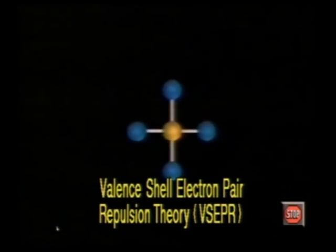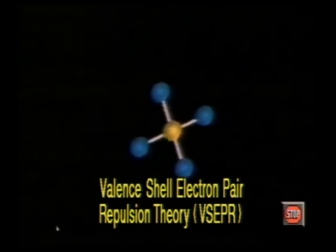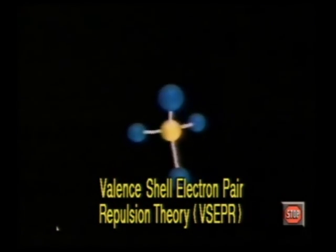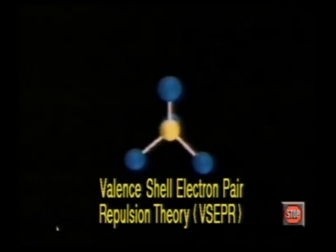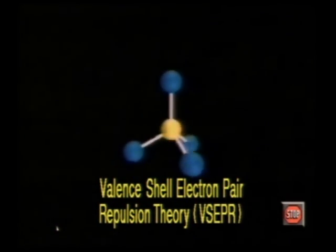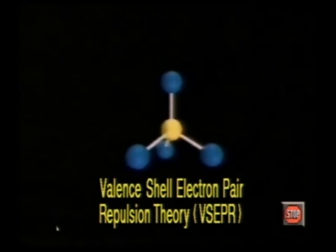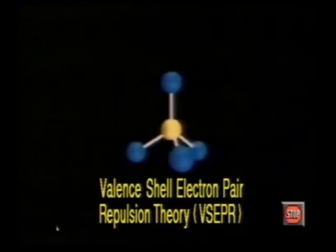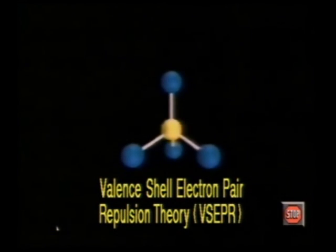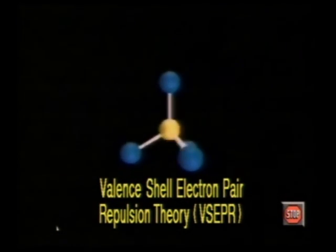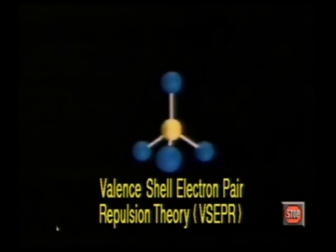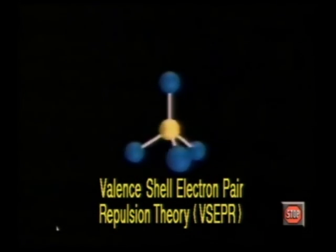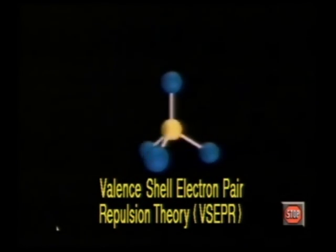This model is based on electron repulsion. Electrons have the same charge and thus repel. The VSEPR theory states that the bonding and non-bonding pairs of electrons will arrange themselves so that the repulsive forces between them are at a minimum. In other words, the electron pairs around the central atom will be positioned as far apart as possible in three-dimensional space.